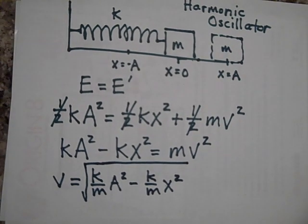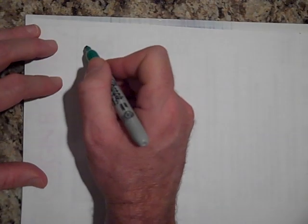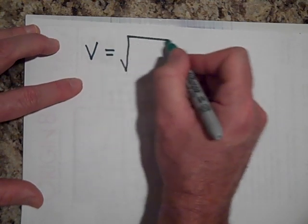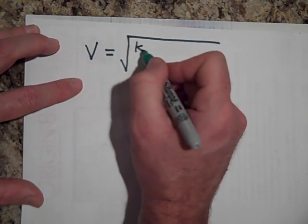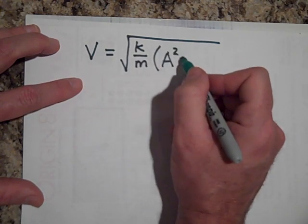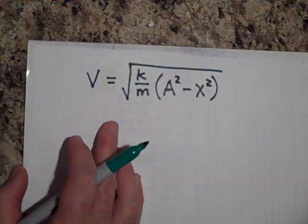Okay, and then let's go one step further and factor out that K over M, the square root of K over M. So that's going to be V is equal to the square root of K over M times A squared minus X squared. Let me let you see where that came from.